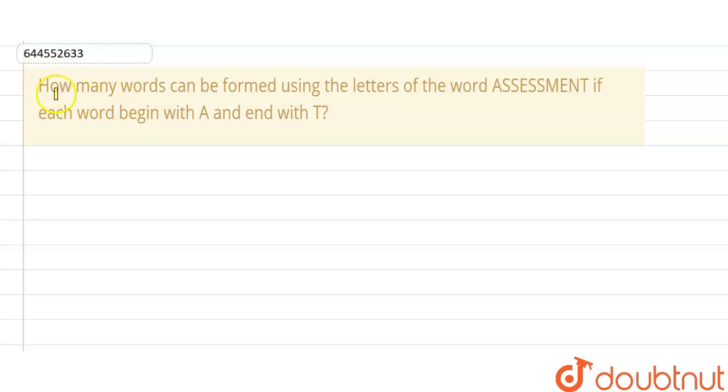How many words can be formed using the letters of the word ASSESSMENT if each word begins with A and ends with T? That is, the place of A and T is fixed. So we have the number of total number of letters.